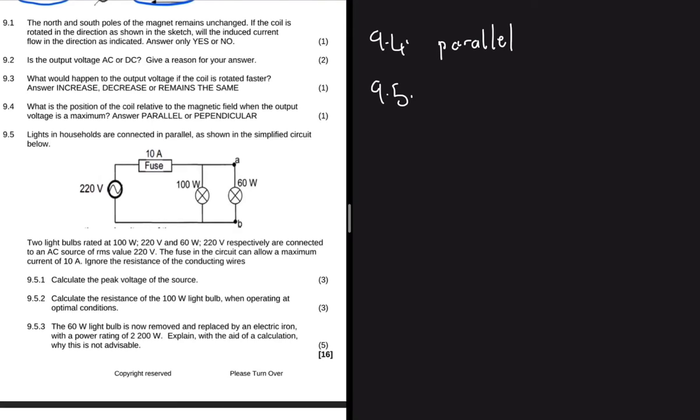So we are told that we have two light bulbs rated 100 watts and 220 volts, and then we have another one 60 watts 220 volts respectively. They are connected to an AC source of RMS voltage of 220 volts, and then the fuse in the circuit can only allow a maximum of 10 amps. Let's ignore the resistance of the conducting wires.